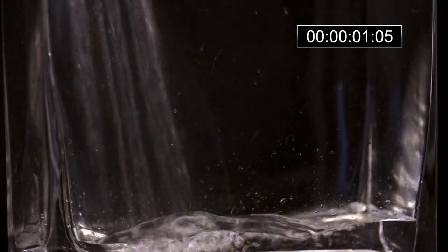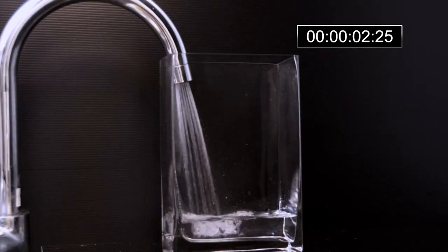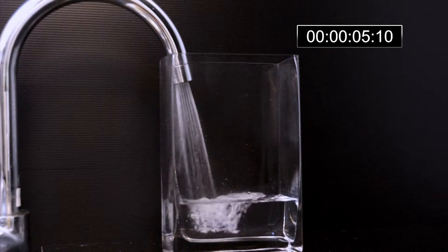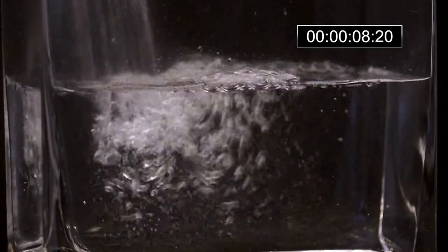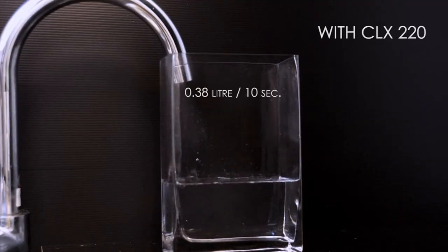And finally, we fix the CLX-220 at the sink faucet. With the result, that the water flow is visibly reduced. The result, approximately 70% less water is used.